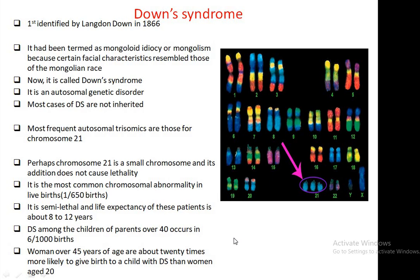It is an autosomal genetic disorder and most cases are not inherited. Most frequently autosomal trisomies are those for chromosome 21, because it is believed that chromosome 21 is a small chromosome and its additional copy does not cause severe lethality. The most common chromosomal abnormality in live births occurs in every 1 in 650 births, and life expectancy of these patients is about 8 to 12 years.